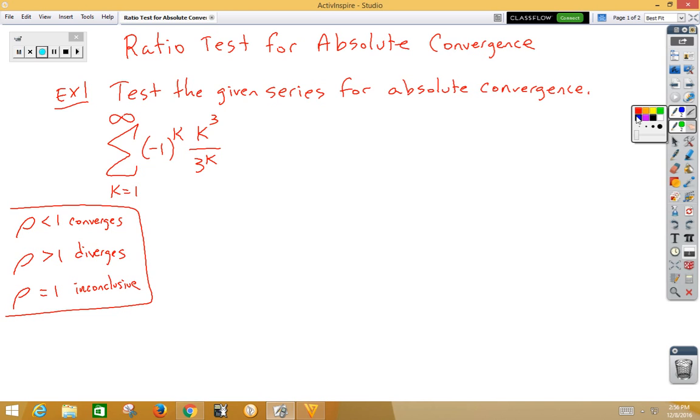So this one says test the given series for absolute convergence. The keyword there is absolute, so the first thing we want to do is consider taking the absolute value of this. If we take the absolute value of that, then what we're looking at really is k cubed over 3 to the k.